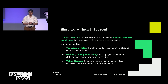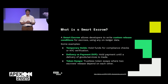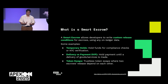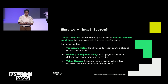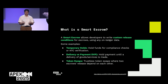Another example is delivery versus payment, or DVP: you're holding payment until a delivery of goods or services is made. For example, if I'm buying a new TV, I want to make sure I receive it before I pay, but the seller also wants to be sure I have the funds and won't screw them over. The third example is token swaps — trustless token swaps where the release of two escrows are dependent on each other.